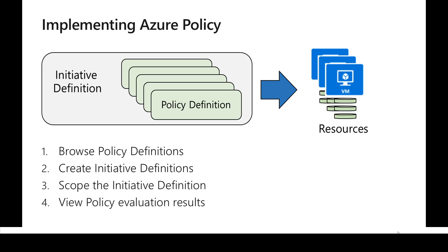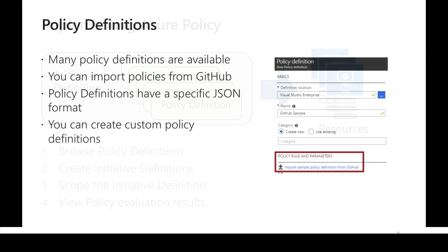Once we assign that policy or initiative, we will be able to monitor the evaluation for those policies against a particular resource scope. We don't need to start everything from scratch - there are many built-in policy definitions, and there are a lot of GitHub samples available which we can directly reuse or customize for our requirements.